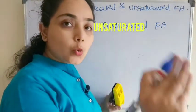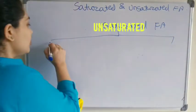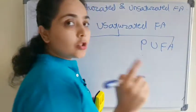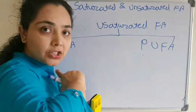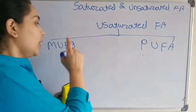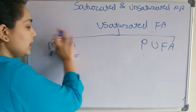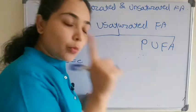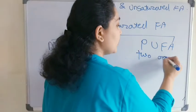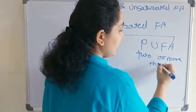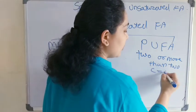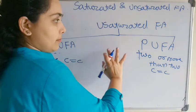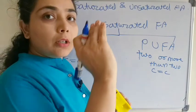Unsaturated fatty acids are divided into two subclasses: monounsaturated fatty acids (MUFA) and polyunsaturated fatty acids (PUFA). If only one carbon-carbon double bond is present in the fatty acid chain, it is a monounsaturated fatty acid. If two or more carbon-carbon double bonds are present, it is a polyunsaturated fatty acid.